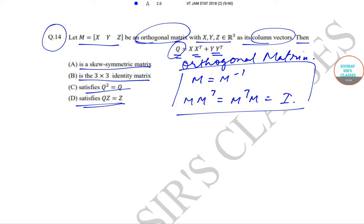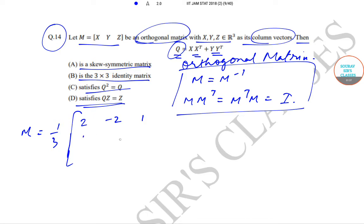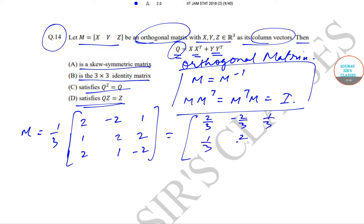For simplicity, we will take an example of an orthogonal matrix of the form (1/3) times a specific matrix. Let me write it more clearly. This will be equal to (1/3) times the matrix with entries 2, −2, 1 in the first row, 1, 2, 2 in the second row, and 2, 1, −2 in the third row, giving column entries 2/3, 1/3, 2/3 and so on.